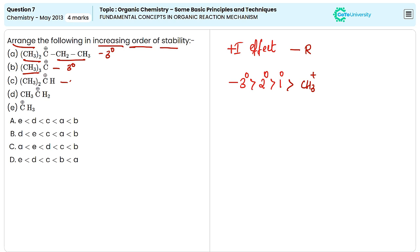The third one is a secondary one. The fourth one is a primary one. And the last one given here is the methyl carbocation.